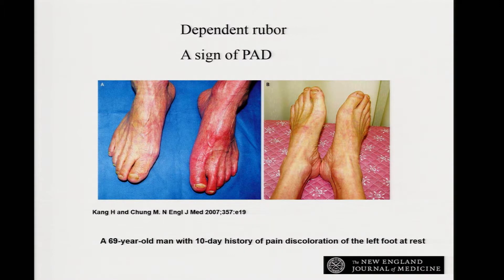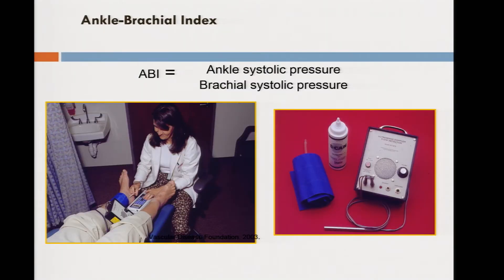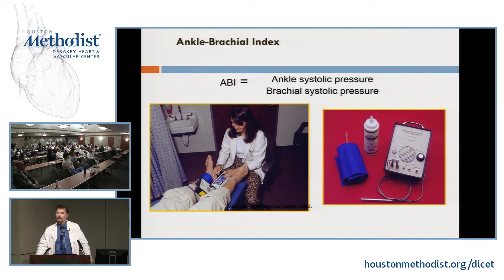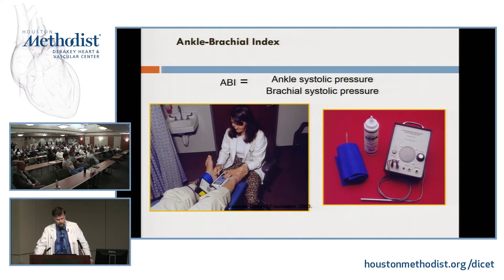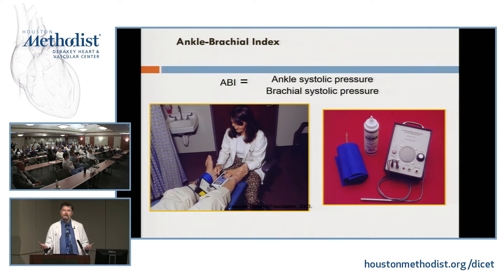That dependent rubor is a microvascular response to ischemia — the vessels, microvenules, opening up wide. Mark Garvey, who asked if we'd have any equations today — this is the only equation I have: the ankle-brachial index. The ABI is basically the pressure at the ankle, derived with a Doppler, divided by the pressure at the arm, also derived using a Doppler, so you have a consistent approach.